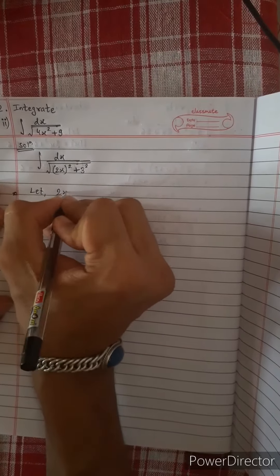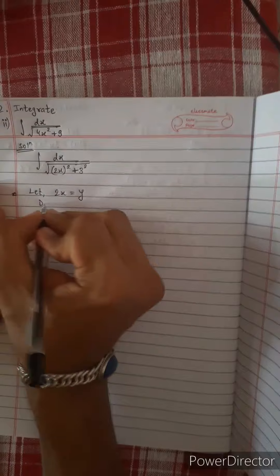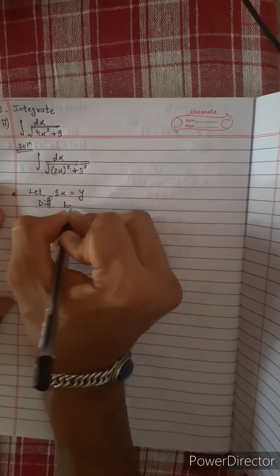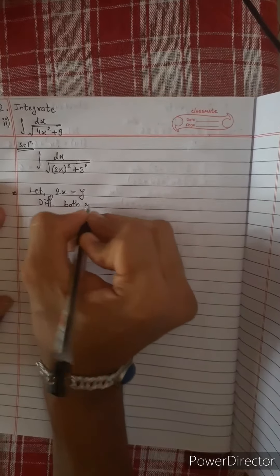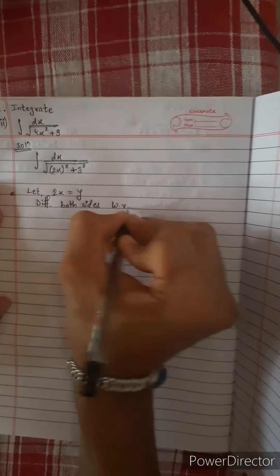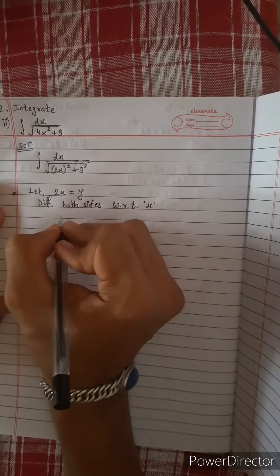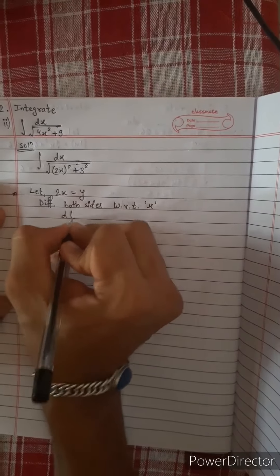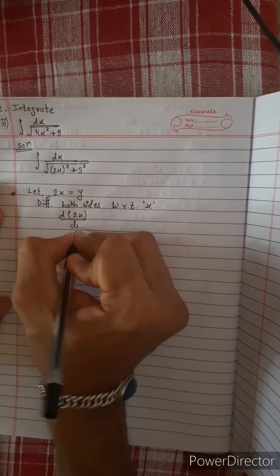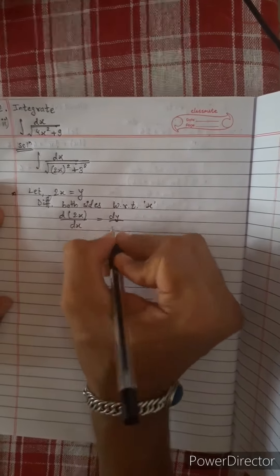Let 2x equal to y. We differentiate both sides with respect to x. We have d(2x) divided by dx equals dy by dx.